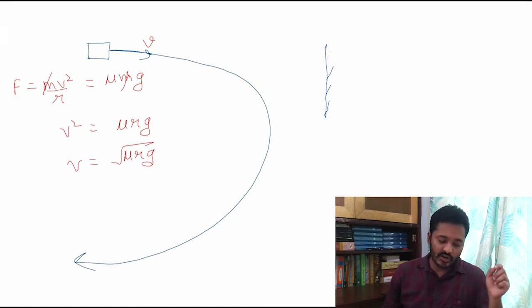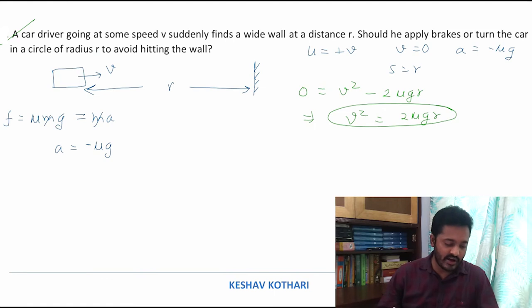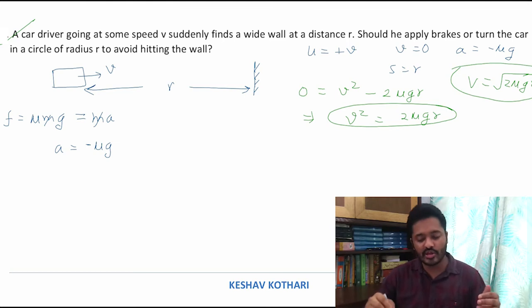So we have obtained two aspects. The value of velocity for circular motion is √(μrg), while for braking we found the required velocity is √(2μrg). So if V = √(2μrg) is the initial speed, it is favorable for braking.